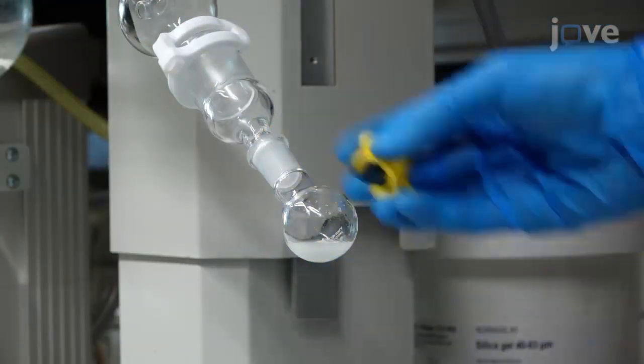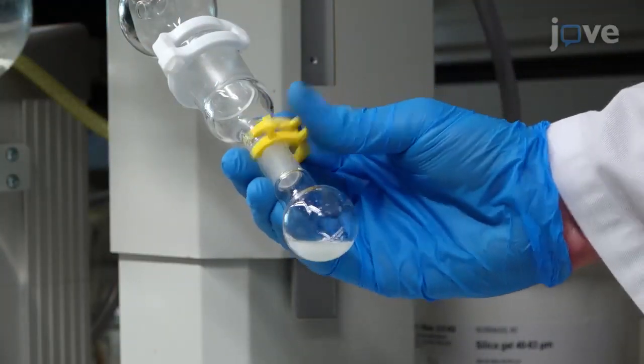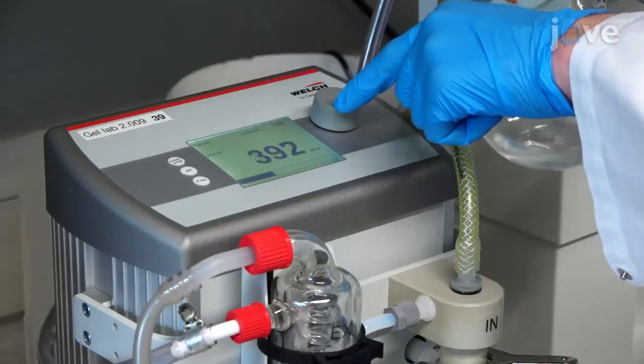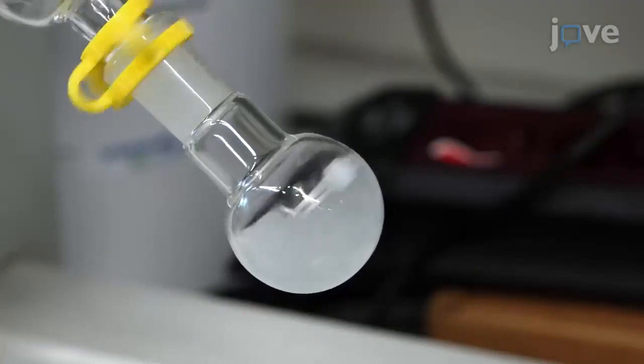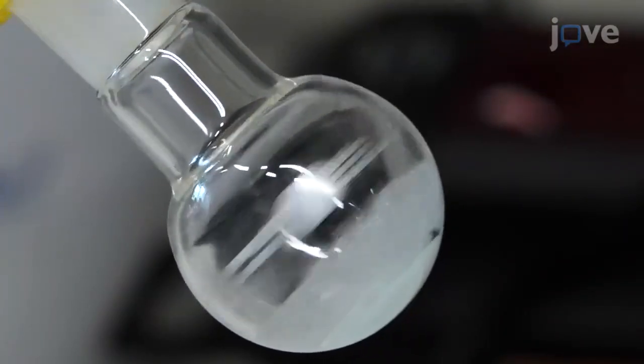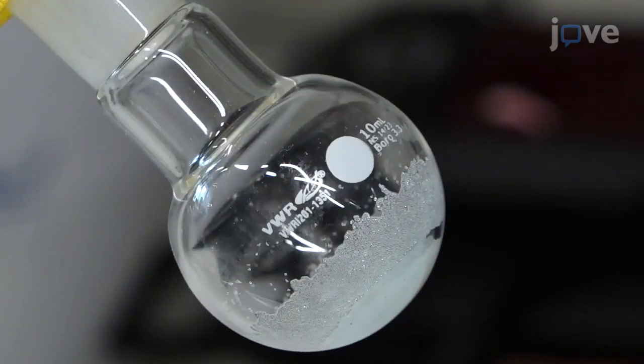Connect the flask to a rotary evaporator. Adjust the speed to 150 rpm and regulate the pressure to minus 20,000 pascals for approximately four minutes until the liquid is evaporated at room temperature.